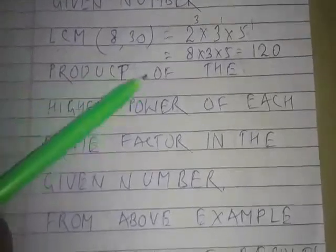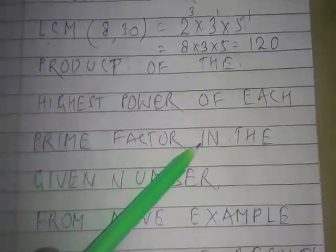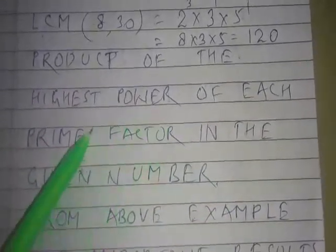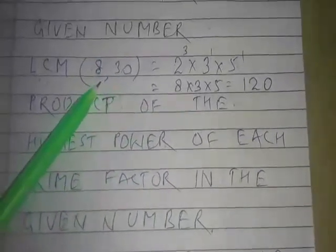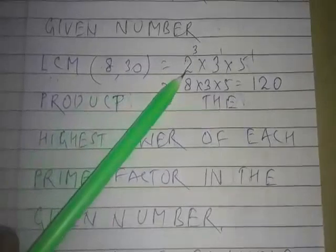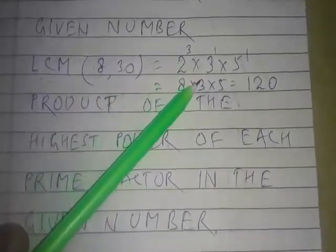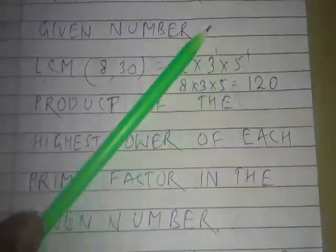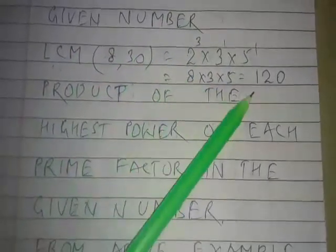The rule to find LCM using prime factorization is to take the product of the highest power of each prime factor available in the given numbers. Looking at 8 and 30, the highest power of 2 is 3, the maximum power of 3 is 1, and the maximum power of 5 is 1. The product of these gives 120.